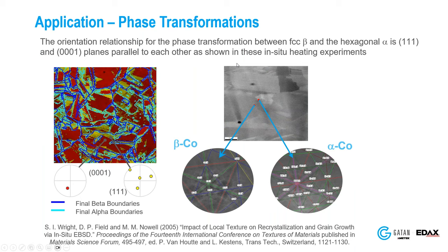Another example is phase transformations. There is typically an orientation relationship between a phase before and after transformation. In this case with cobalt, we start with a hexagonal phase — you can see the basal pole, the 001 pole — then after heating you see the transformation to a cubic phase. You can see the relationship between the two phases: the 111 direction is aligned with the basal c-axis in the hexagonal phase. You can deduce orientation relationships and do all kinds of analysis before and after phase transformations.